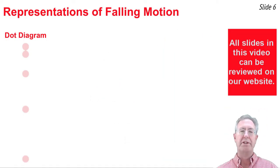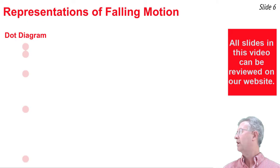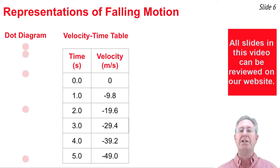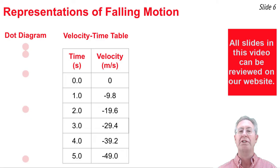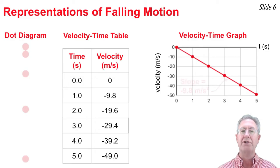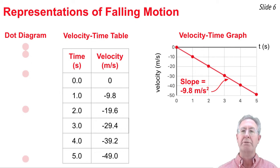Let's look at several representations of a free falling object. In a dot diagram representing strictly falling motion, the dot spacing increases as the object continues to fall. In a velocity timetable showing velocity at one-second intervals, velocity increases by 9.8 meters per second in the negative direction each consecutive second. Finally, a velocity-time graph for a free falling object is linear, indicating constant acceleration. The slope of the line is the acceleration: negative 9.8 meters per second squared.